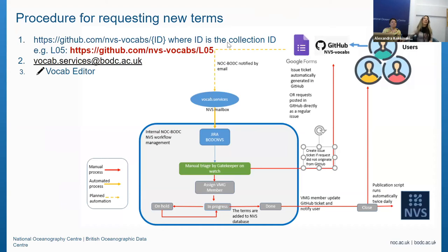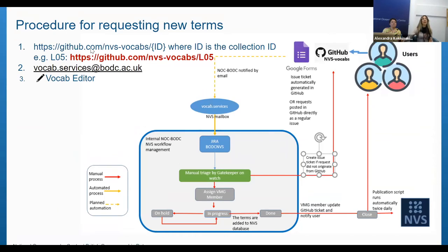Here is the procedure if you want to request new terms. For end users that want to request new terms, there are three different ways: the first is to visit our GitHub account and go to the required vocabulary following the URL pattern provided; when in the repository, you can create issues to create new terms or ask questions. Users can also send emails to vocab.services@bodc.ac.uk. And if users are authorised vocabulary editors, they can directly use the vocab editor to create new terms and mappings.